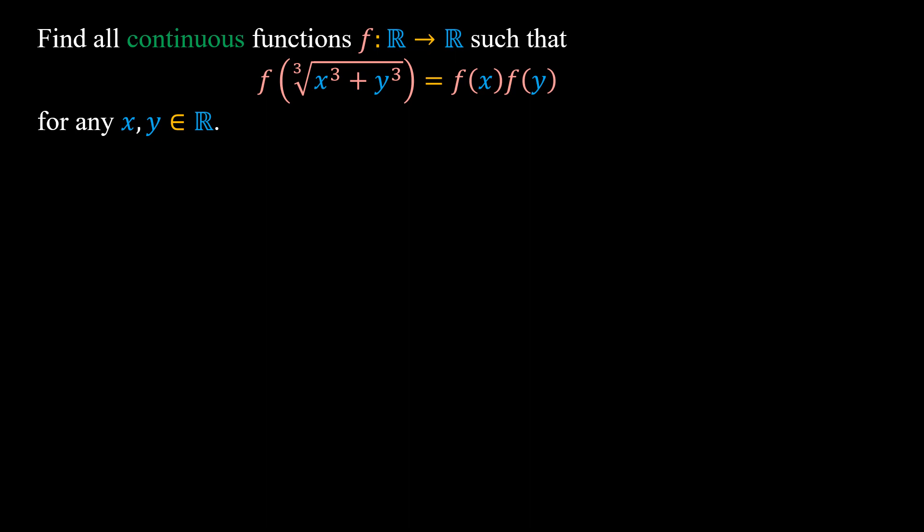Hello everyone, in this video we are going to find all the continuous functions f mapping real numbers to real numbers such that f of the cubic root of x cubed plus y cubed equals f of x times f of y for any real numbers x and y. I will present the solution in one method, as this is the easiest method that I have.